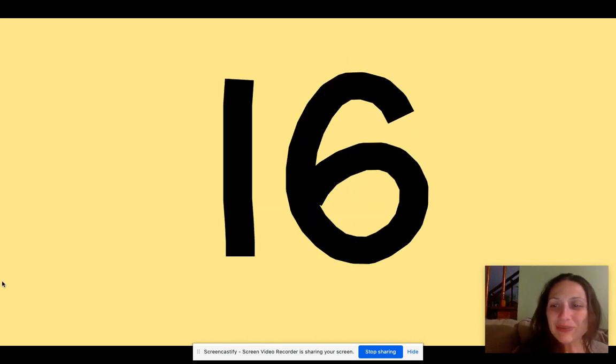So here is what the number 16 looks like. And to make the 16, we need to start at the top, make a straight line down, start at the top again, curve back to the left, and keep going all the way back around. One and a six together, make the number 16.